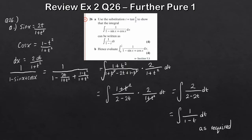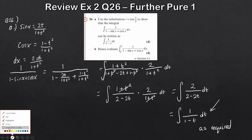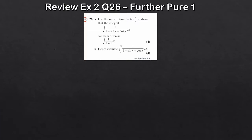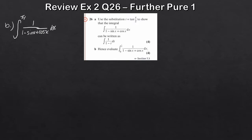That's part a done - four marks. Now for part b, we're asked to evaluate. Since it says 'hence', we use the result we just derived. We want to find the integral of 1 over (1 - sin x + cos x) dx between 0 and π/4. Using our substitution, the new integral is the integral of 1/(1 - t) dt.